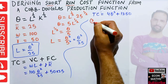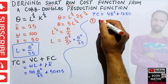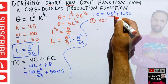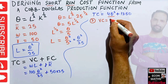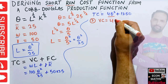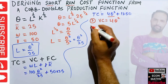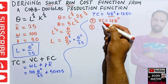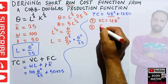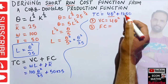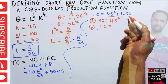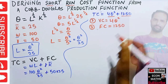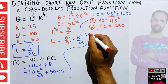Our second cost to identify is variable cost, which is the term 4Q². The third cost is fixed cost, which is simply the constant term 1250 — this is obviously fixed and does not change with output.